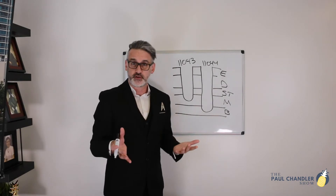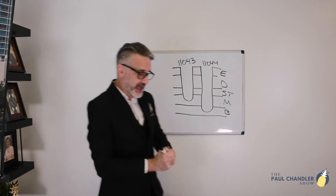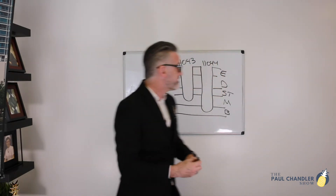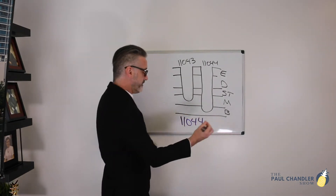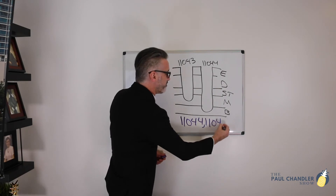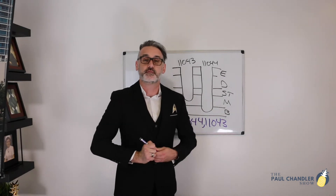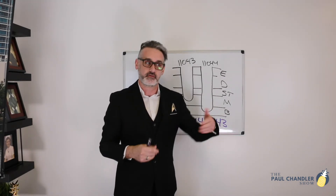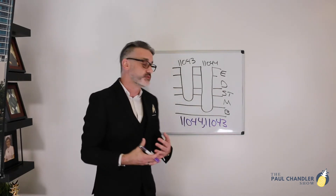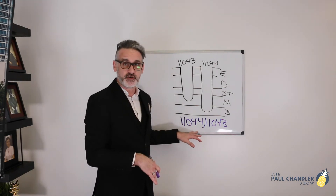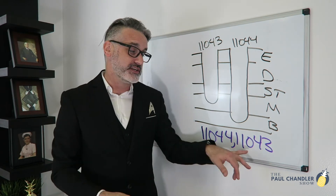If we have two different locations — one for the muscle and one for the bone — we always want to put the more comprehensive procedure code first, because most insurance carriers will pay the first code at 100% and the second code at about a 50% deduction. So no matter what procedures we're doing, we always put the more comprehensive code first. Since bone is deeper down, 11044 is more comprehensive than 11043 going down to the muscle layer.